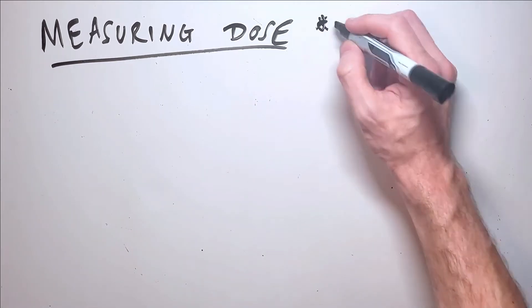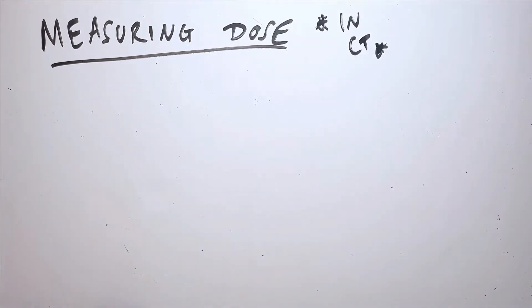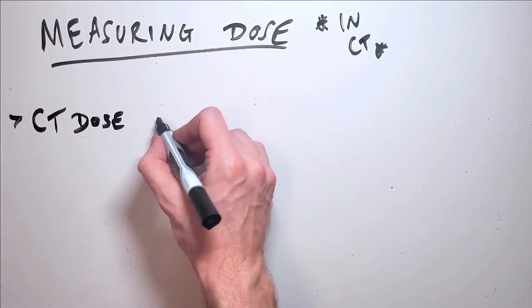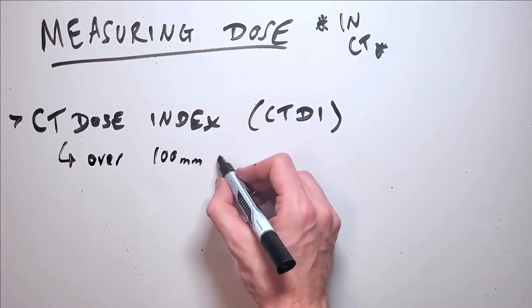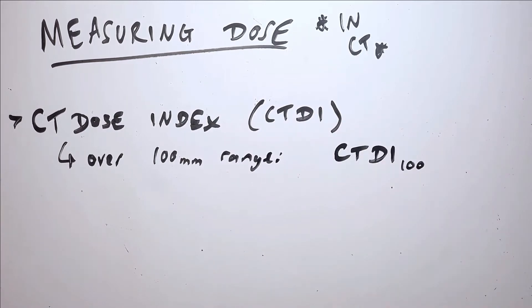There are several other expressions of radiation dose which are specific to CT imaging. CTDI stands for CT Dose Index. Most commonly in CT dosimetry, we scan a 100mm range and take measurements in an acrylic phantom based on that 100mm range. The absorbed dose in the middle of this range is called the CTDI 100.